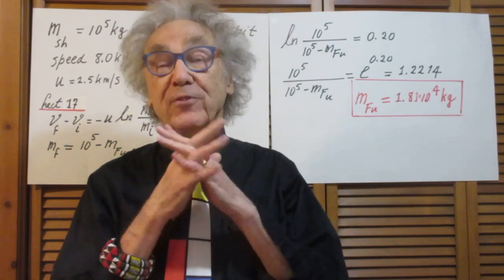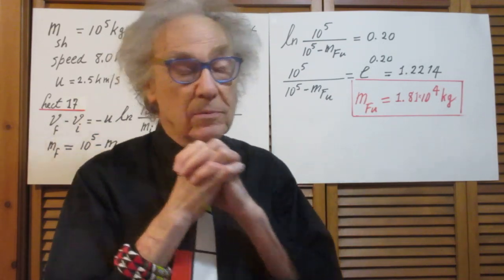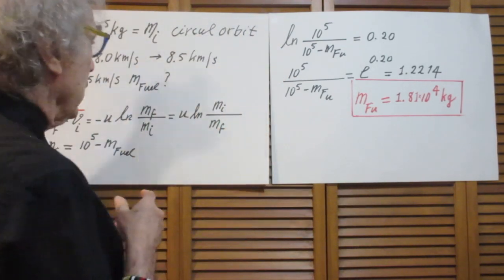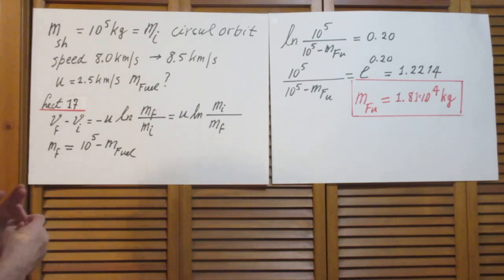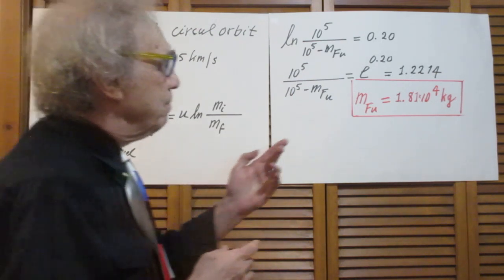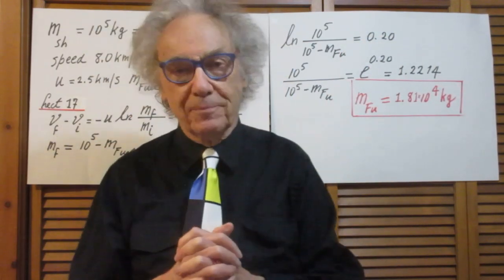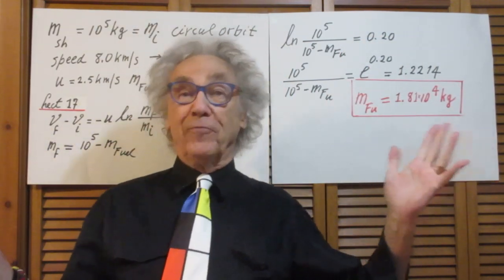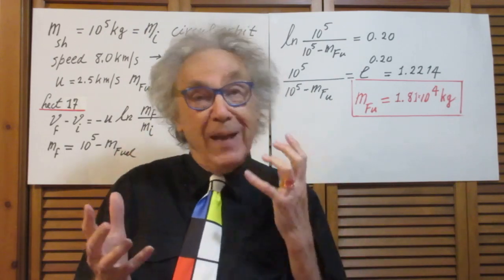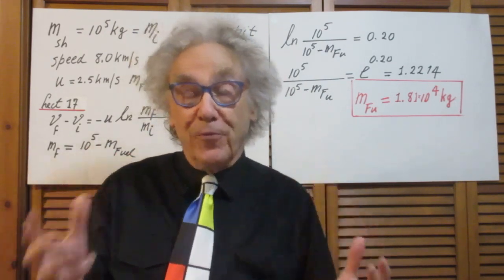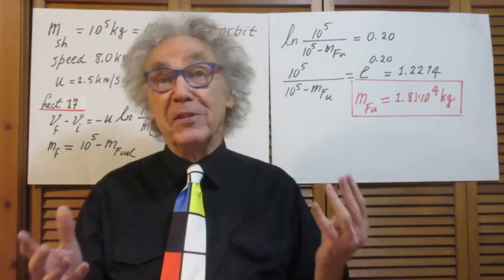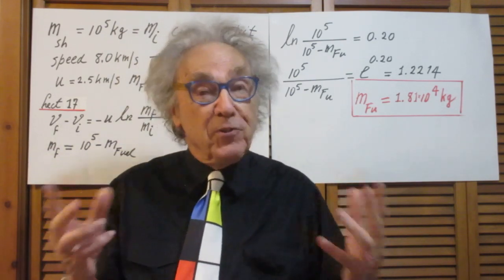So after the burn, the mass of the shuttle went down to about 8.2 times 10 to the fourth kilograms. Not so difficult, wasn't it? But it's nice to know that the amount of fuel that is needed to make this change is by no means trivial.